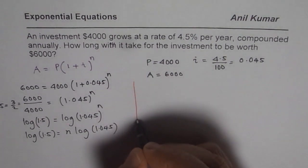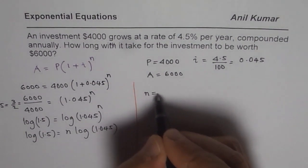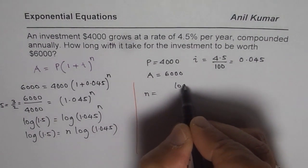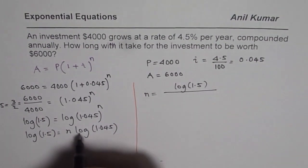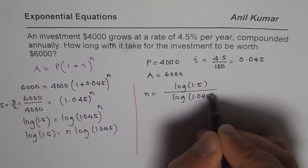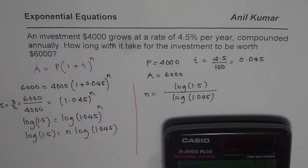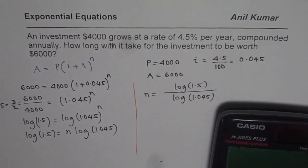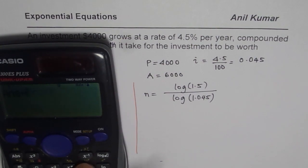So now from here we can isolate n and write down n equals log(1.5) divided by log(1.045). So that gives us the time in years when this will be $6000. Let's calculate: log(1.5) divided by log(1.045).